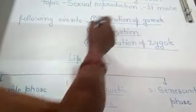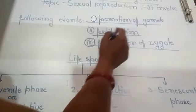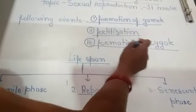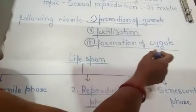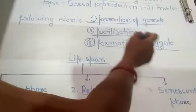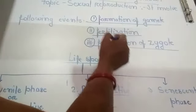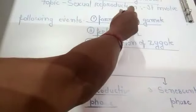Sexual reproduction involves the following events: formation of gametes, fertilization, and formation of zygote. These three events are involved in sexual reproduction.